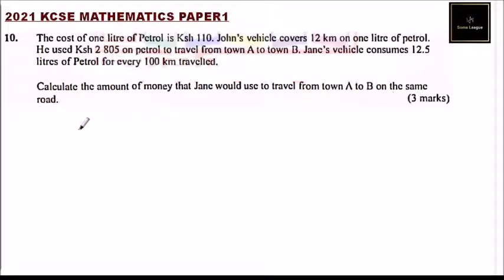Question number 10. The cost of one liter of petrol is 110. John's vehicle covers 12 kilometers on one liter of petrol. He used Kenya shilling 2,805 on petrol to travel from town A to town B. John's vehicle consumes 12.5 liters of petrol for every 100 kilometers traveled.